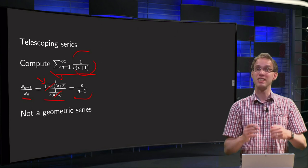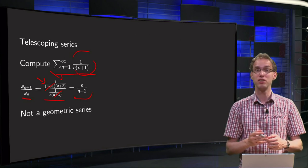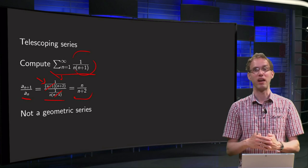But anyhow, this does depend on n. For any value of n this will be different. For a geometric series, this ratio has to be constant. It is not constant, so we do not have a geometric series.